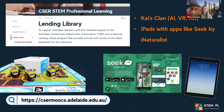Through CSER, funded by the Australian Government Department of Education, we have free digital technologies kits that schools can borrow. Within our kits, we have great computer vision supported technologies. These include Kai's Clan kits — a robot that includes coding, AR, VR, Internet of Things and AI all in one. We also have kits with iPads including the app Seek by iNaturalist, a child-friendly AI tool that lets students use computer vision to detect wildlife, plants, animals or insects in their local environment. Lesson plans are available to support classroom use.